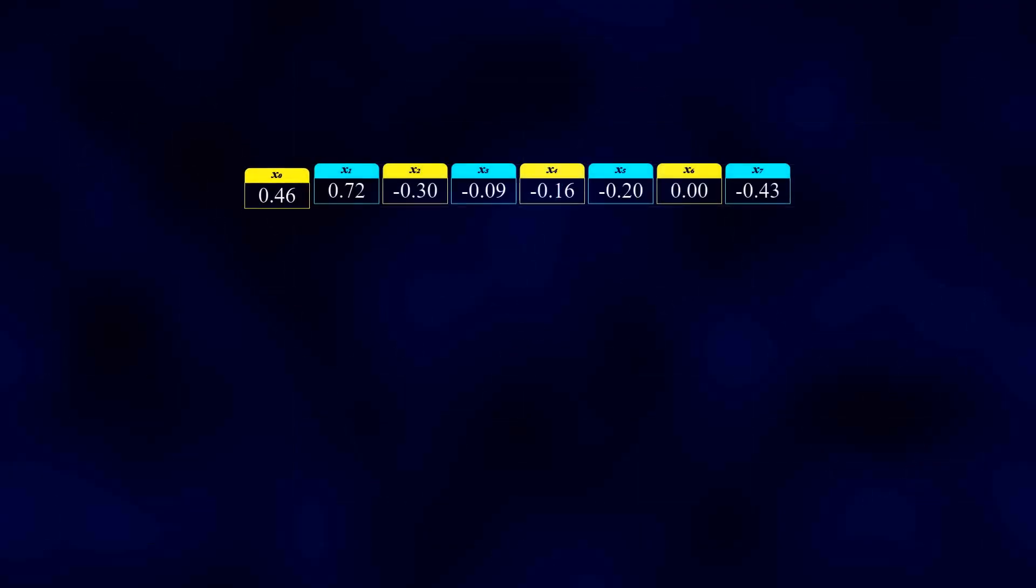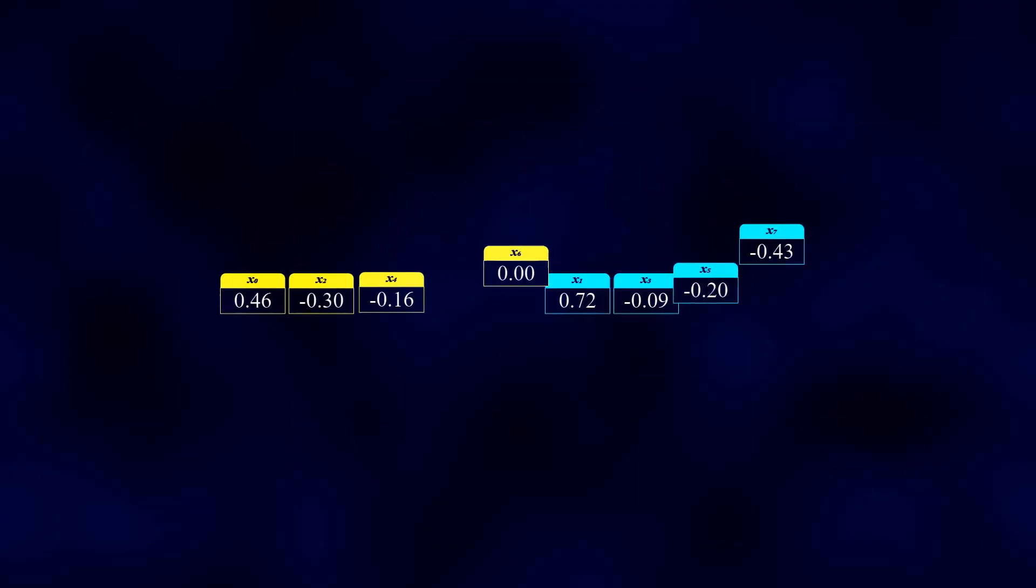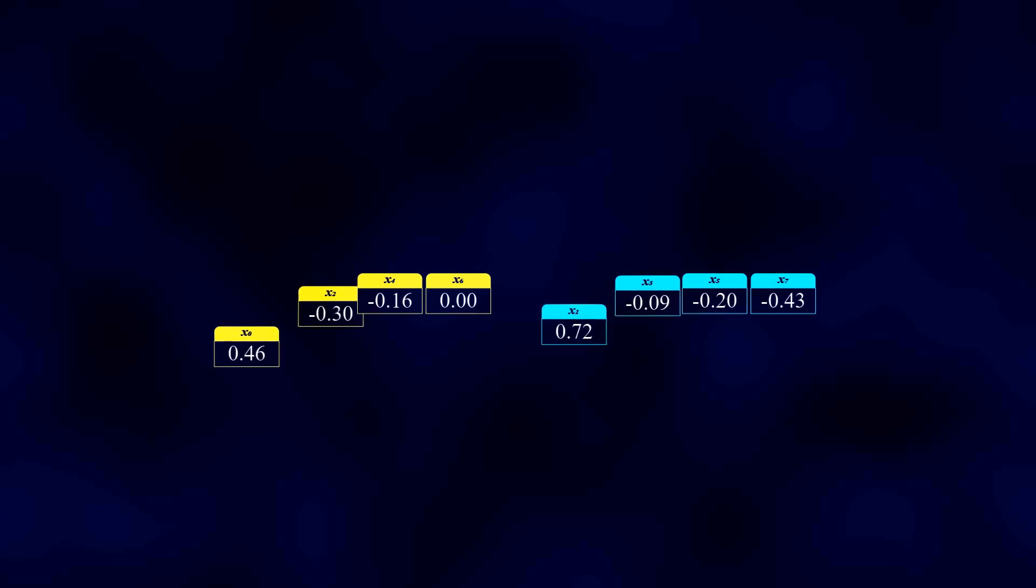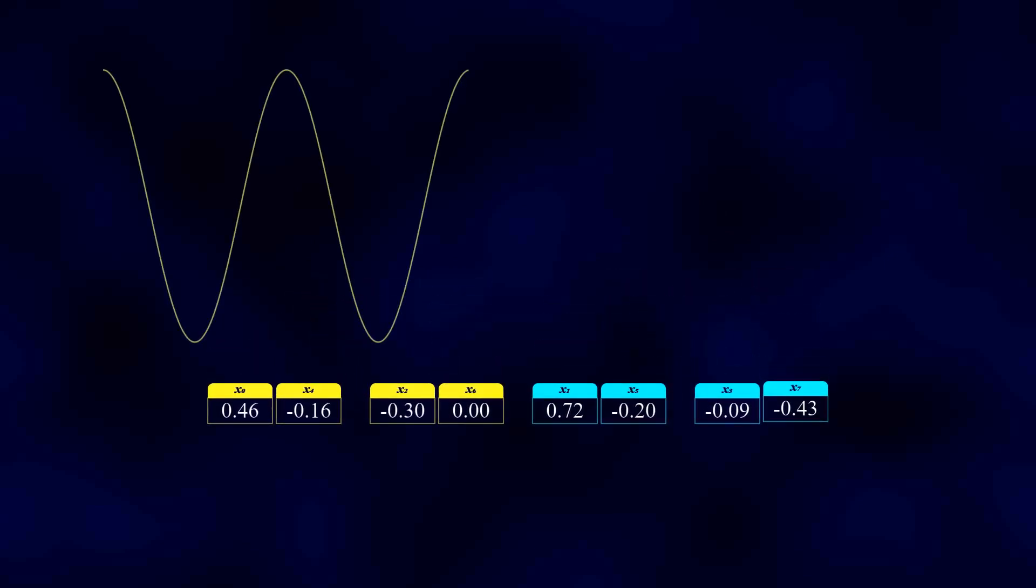This is why the FFT splits the samples into even and odd indices. It takes advantage of the distinct symmetry properties of cosine and sine waves. This approach wouldn't work if we split the signal into left and right halves, as we did in the merge sort algorithm.